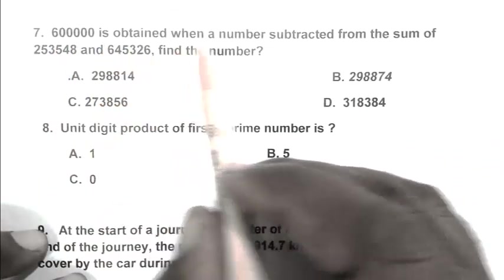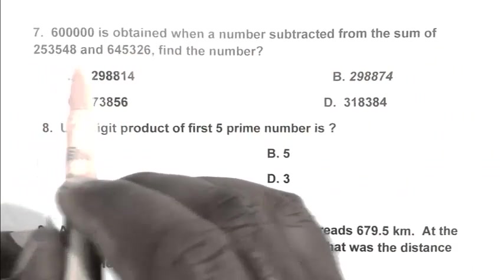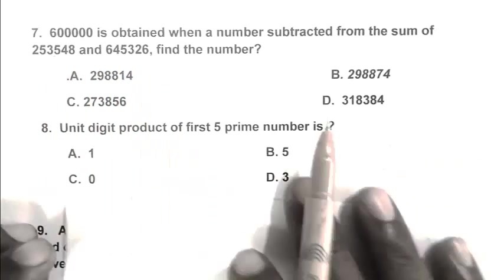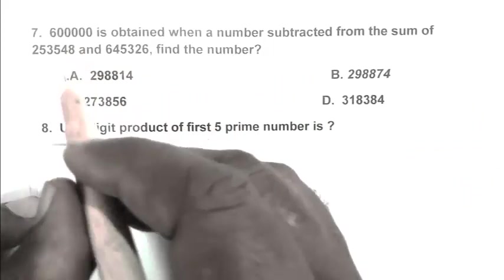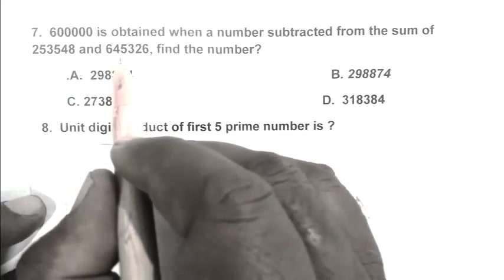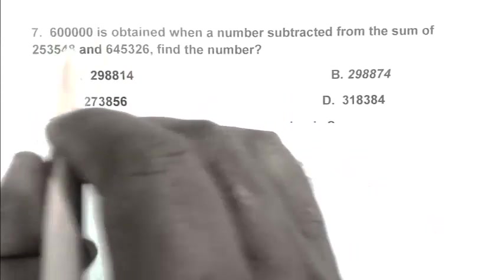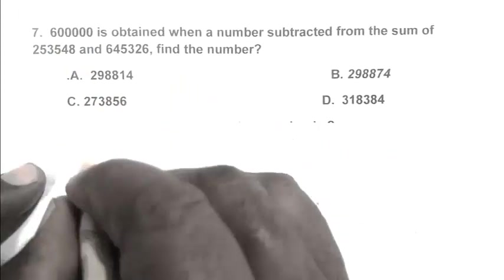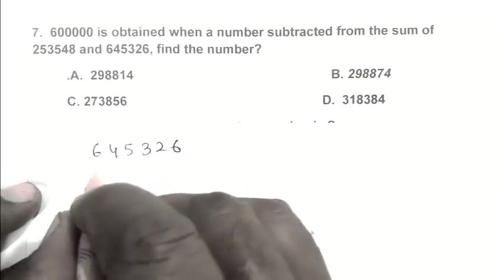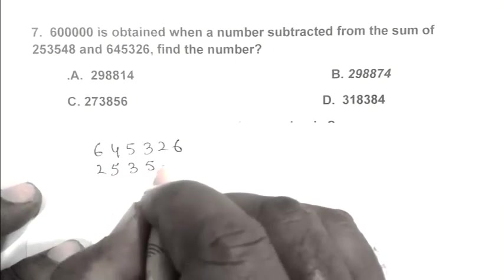Question number 7. 600,000 is obtained when a number is subtracted from the sum of 253,548 and 645,326. Find the number. First we calculate the sum: 645,326 plus 253,548 equals 898,874. Then we subtract 600,000 from the resulting number. 898,874 minus 600,000 equals 298,874. B is the right answer.